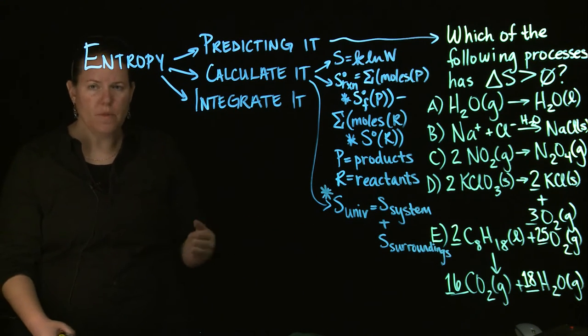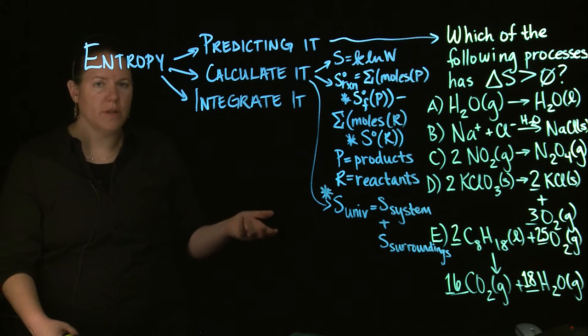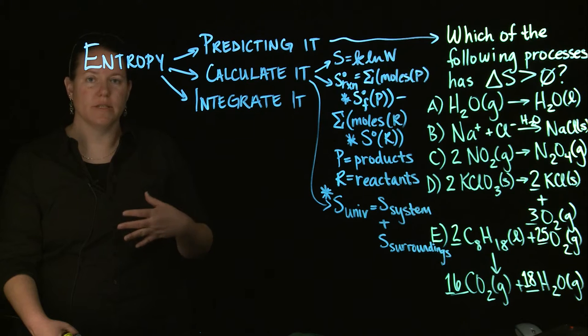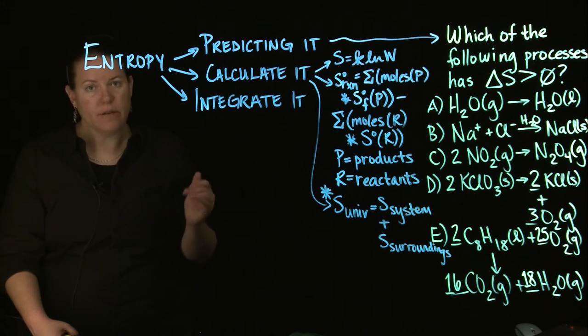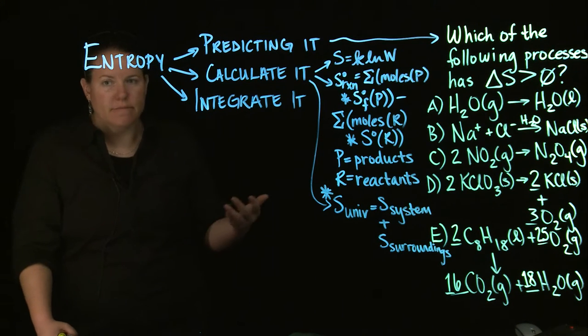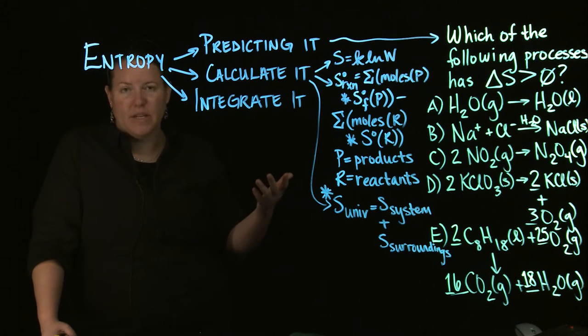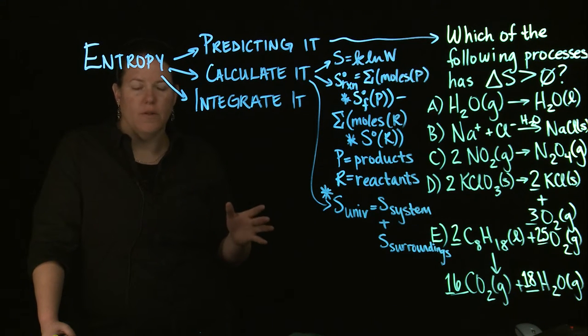In chemistry, until you get into higher levels of chemistry, we really actually don't care that much about the S of the universe. We have something else that will give us the spontaneity of a reaction, that is G, for those of you who are wondering. And then the surroundings, we're not often interested in that. We're interested in the reaction beaker. So in chemistry, a lot of our thermodynamics talk is talking about the system. We're talking about the reaction beaker, what's happening in that reaction beaker.